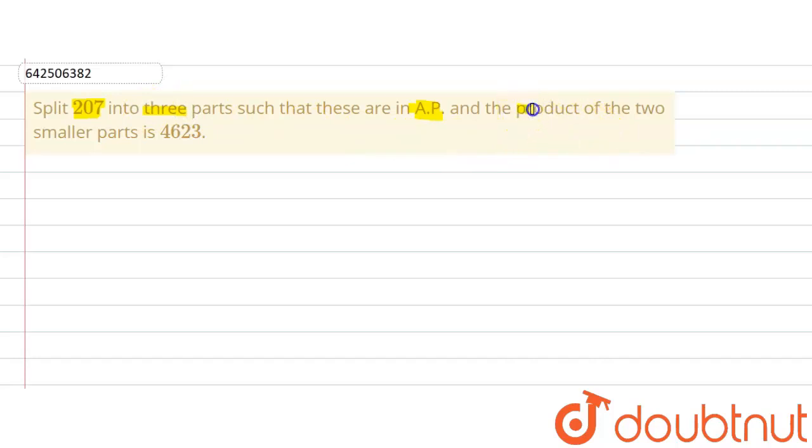And the question further says that the product of the two smaller parts is 4623.